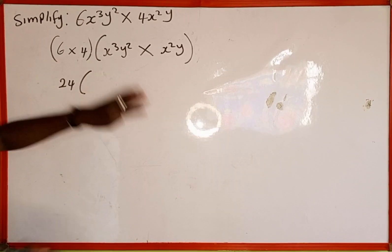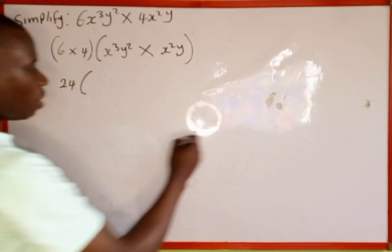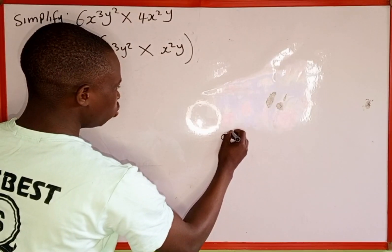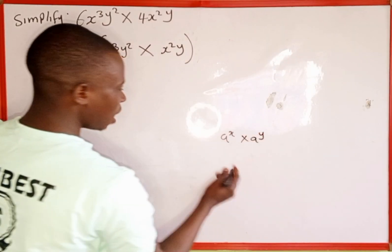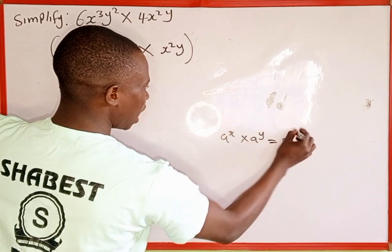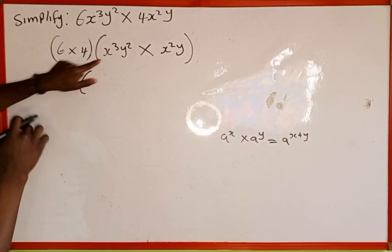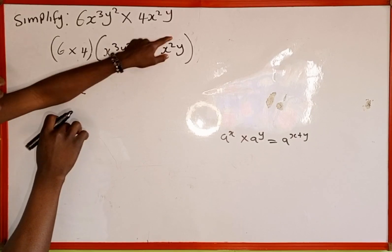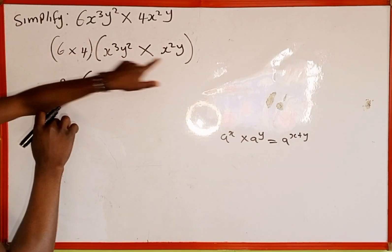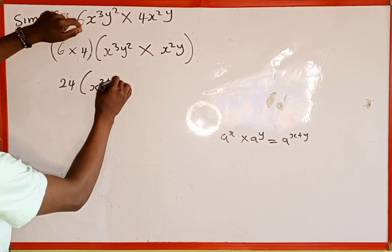Now we multiply the x variables: x³ × x². Remember, when multiplying aˣ × aʸ with the same bases, we write one base and add the two powers. So x³ × x² becomes x with power 3 + 2.